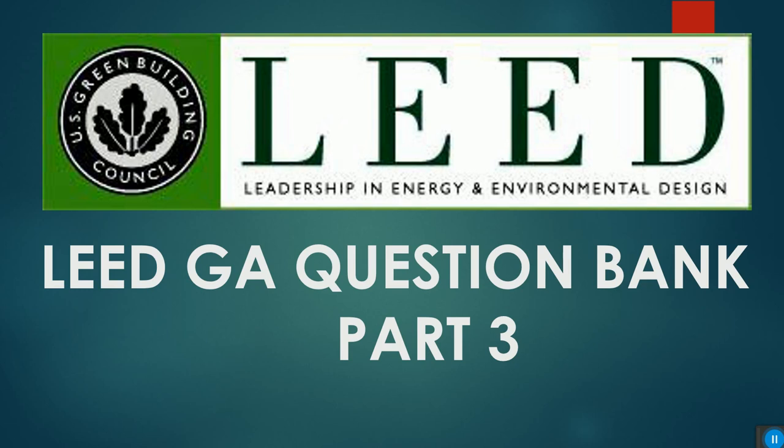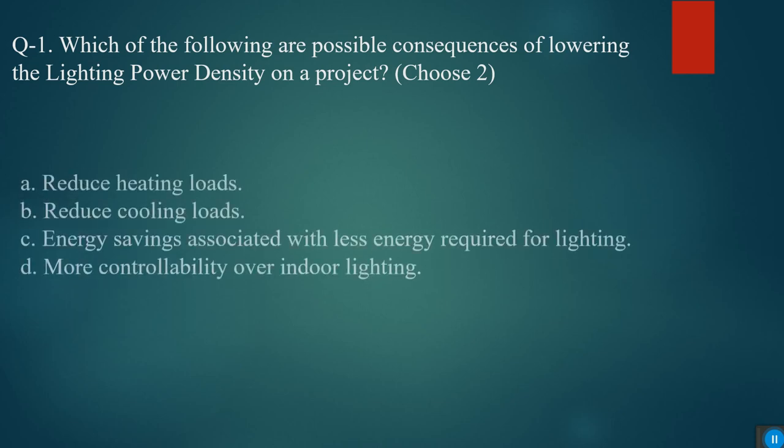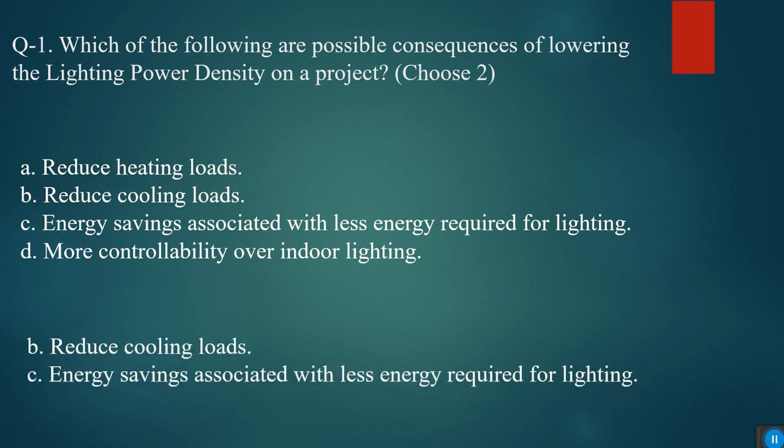Which of the following are possible consequences of lowering the lighting power density on a project? Options are reduce heating loads, reduce cooling loads, energy savings with less energy required for lighting, and more controllability over indoor lighting. The answers are reduce cooling loads and energy savings with less energy required for lighting.